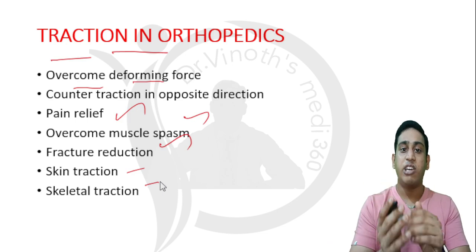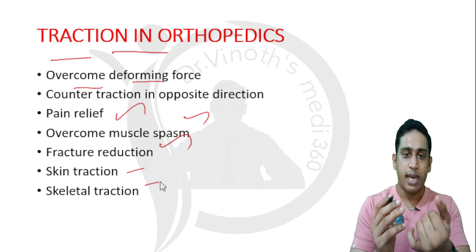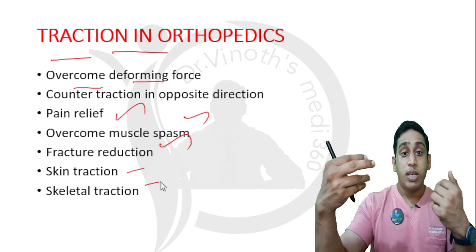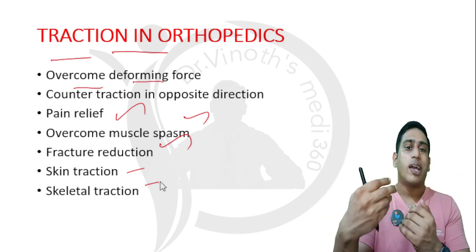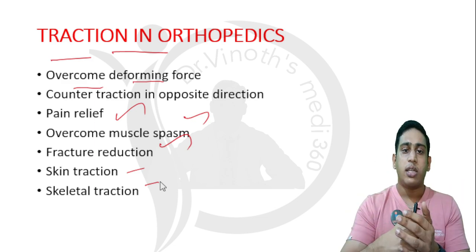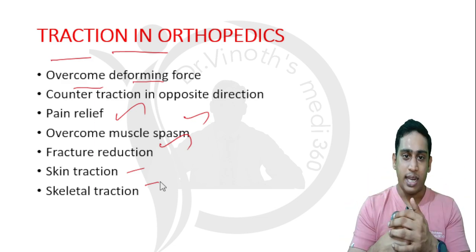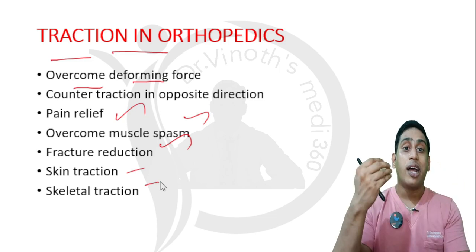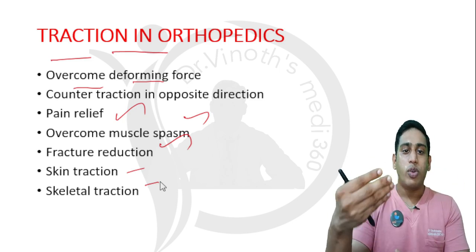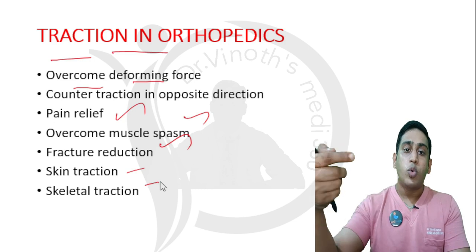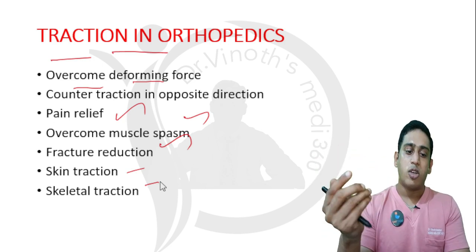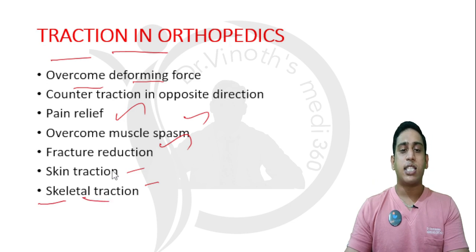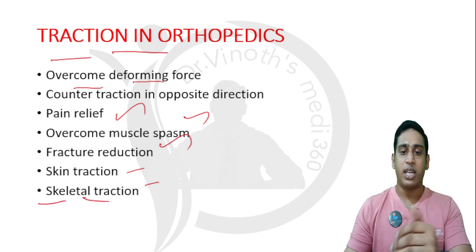On the other hand, if we are using some pins — either a Steinman pin or a Denham's pin — and inserting them into the bone, either into the tibial region, for a lower limb into the calcaneal region, proximal tibial area, distal tibial region, or distal femur area — we are applying a pin through the bone. That is why it is called skeletal traction. We suspend the weights based on the weight of the patient.